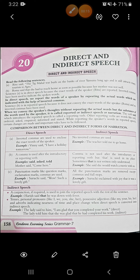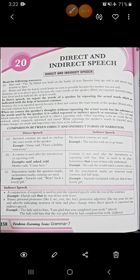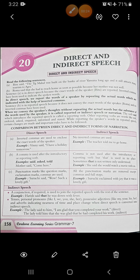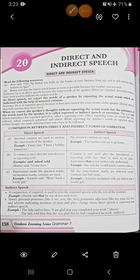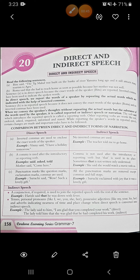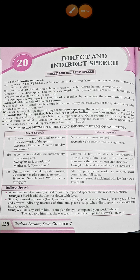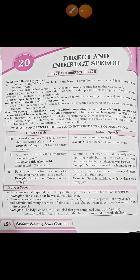See the first line: read the following sentence. Ritu said, 'The Taj Mahal was built on the banks of river Yamuna long ago and it still attracts many tourists through Agra.' And the second: Roma said that she had to reach home as soon as possible because her mother was not well. If you just see these two sentences, the first one is direct speech and the second one is indirect speech. How we come to know is that the first statement is the exact words of the speaker — Ritu — and it is given with inverted commas. The second one is not the exact words of the speaker; someone else is saying what Roma has said, and you can see we are not using inverted commas.